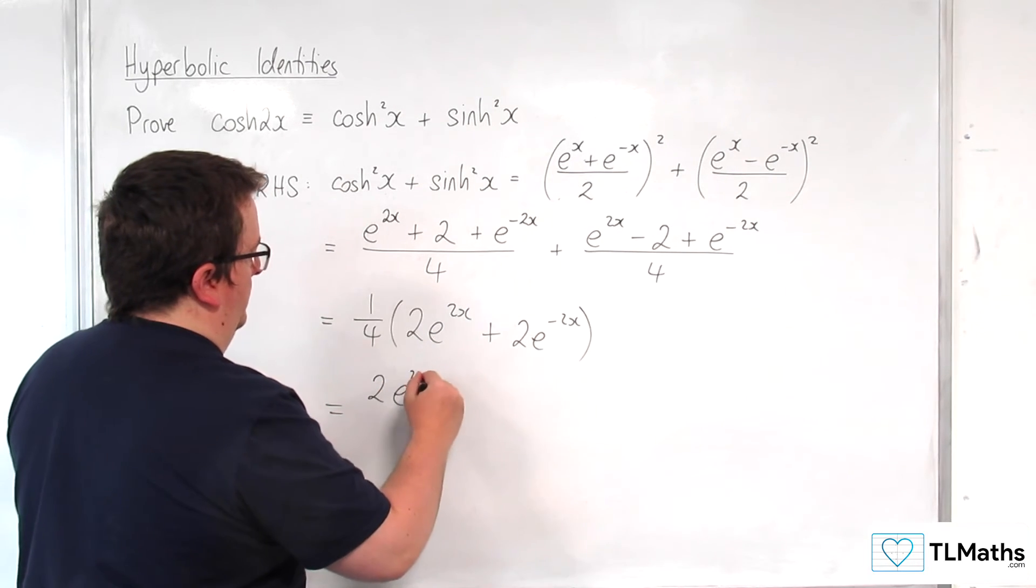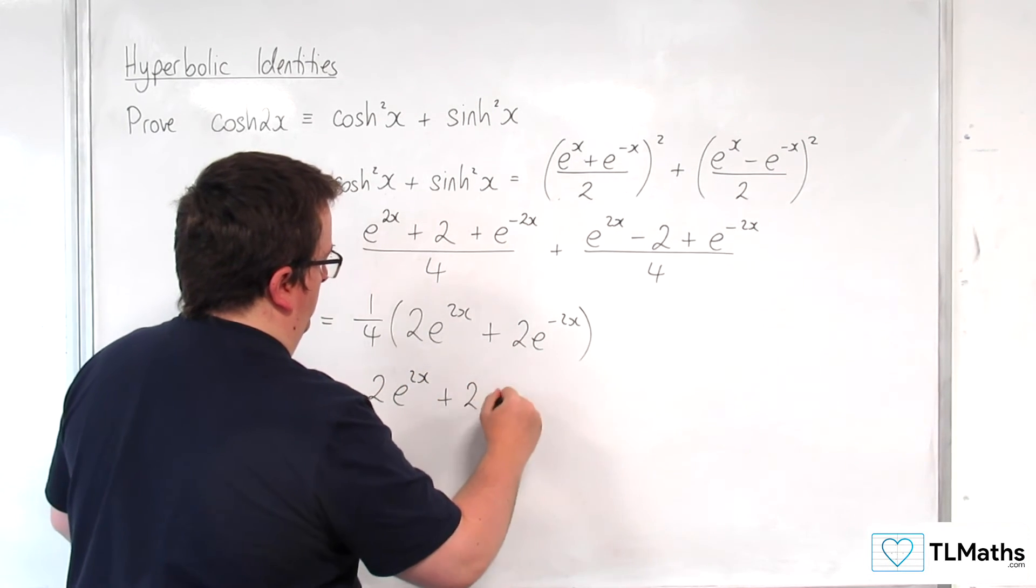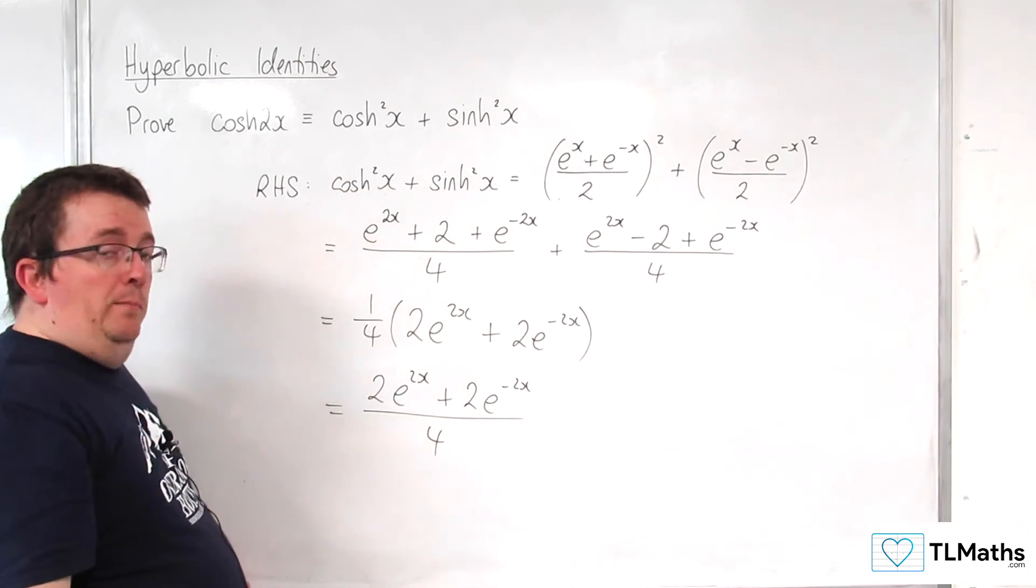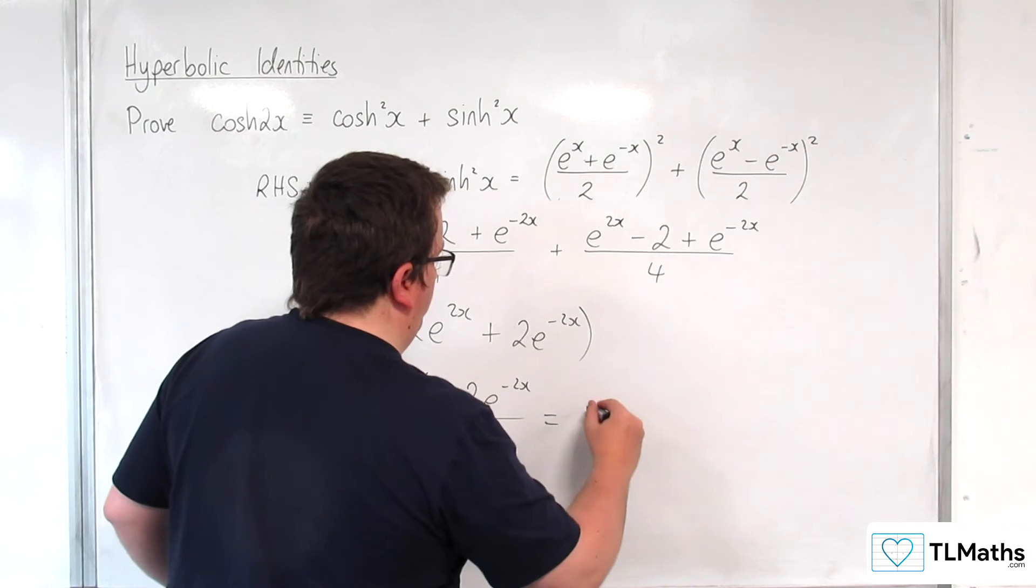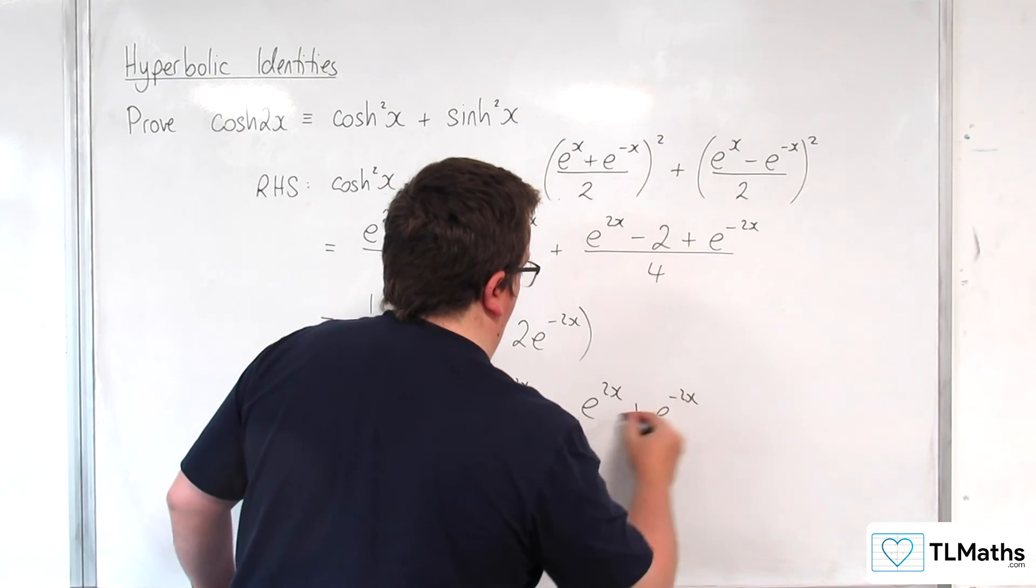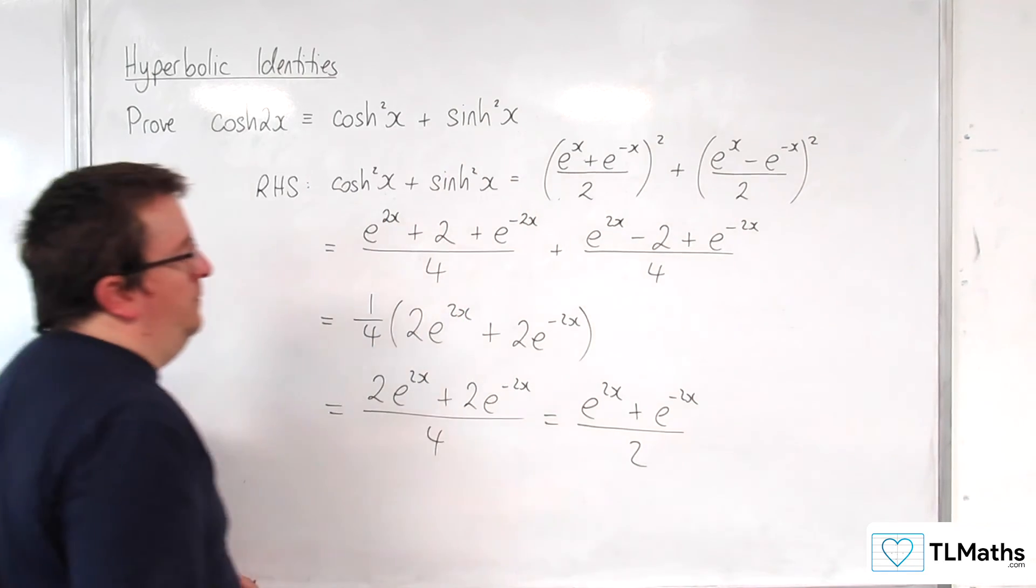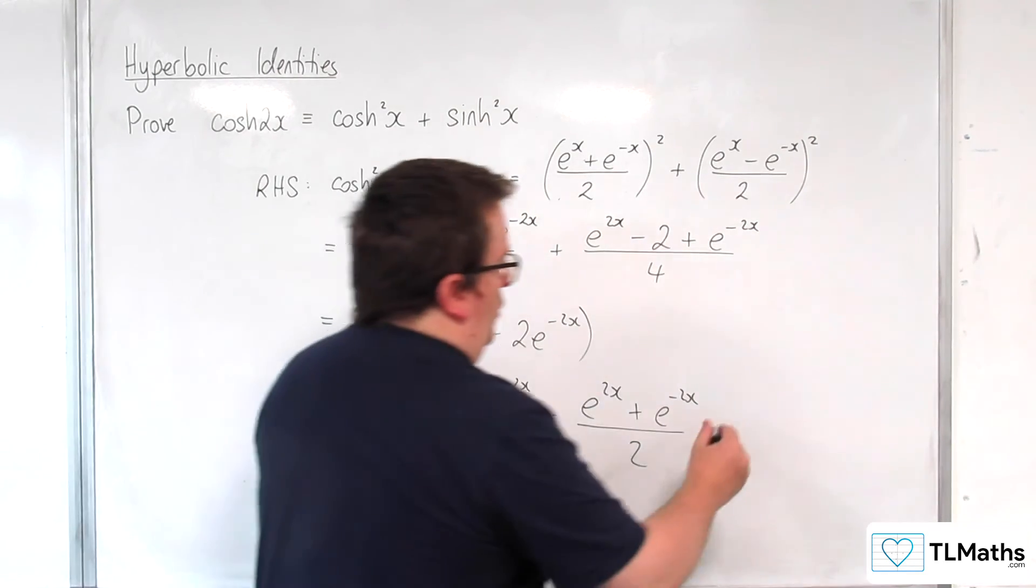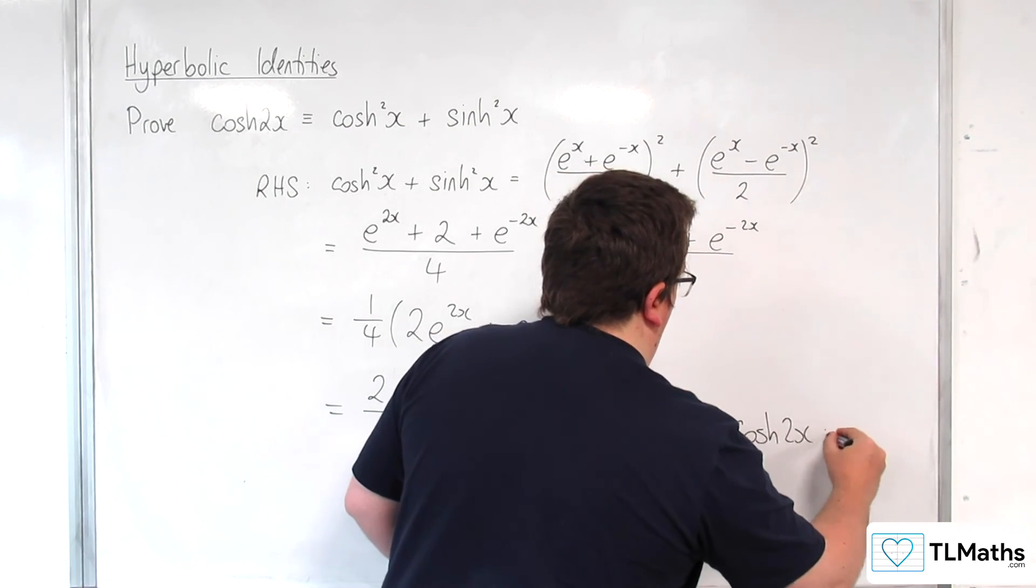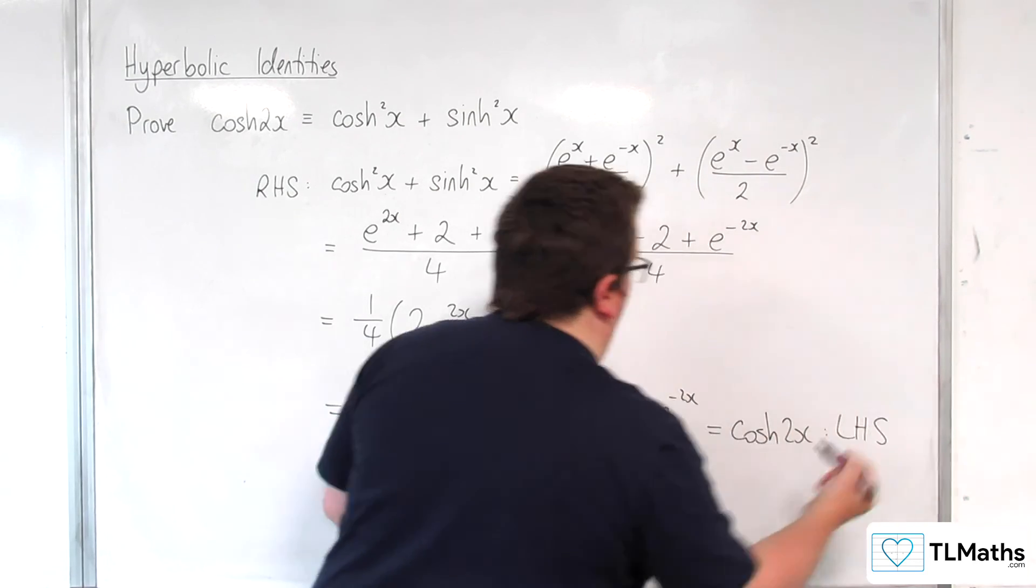So I can write that like that. We can divide top and bottom by 2. And of course that is cosh of 2x, which was our left hand side.